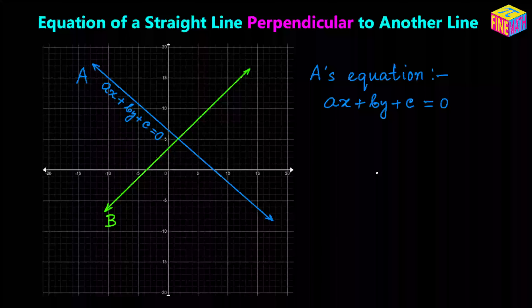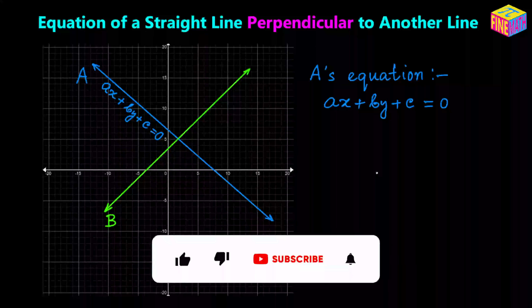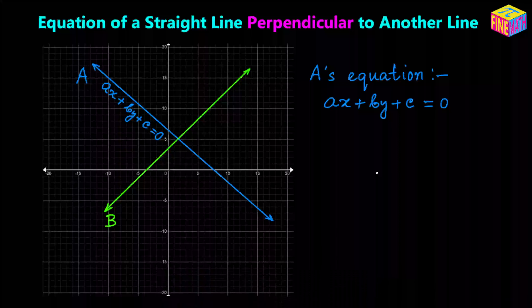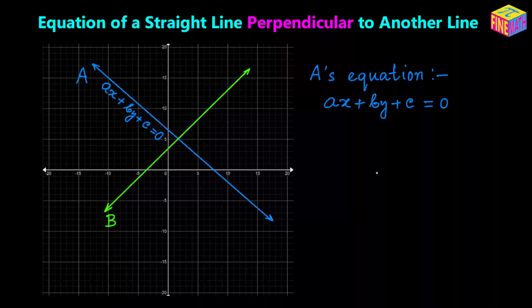In this diagram I have a line in blue color. Let's say that's line A and its equation has been provided: AX plus BY plus C equals 0. We have to find out the equation of a straight line which is perpendicular to line A. I also have a straight line in green color, named line B, and we have to find out what is the equation of straight line B.